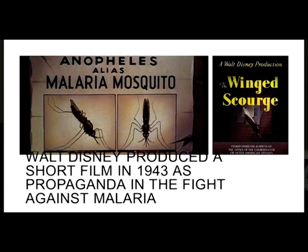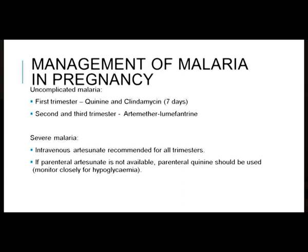For management of malaria in pregnancy: in uncomplicated malaria, the first trimester uses quinine and clindamycin for 7 days. In the second and third trimester, artemether-lumefantrine is used. In severe malaria, intravenous artesunate is recommended for all trimesters. If unavailable, quinine and clindamycin can be used, but close monitoring for hypoglycemia — which is often refractory to intravenous glucose — is required, necessitating ICU care.